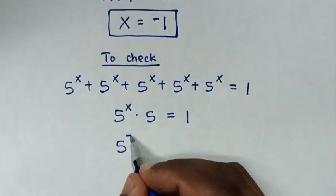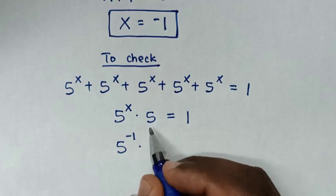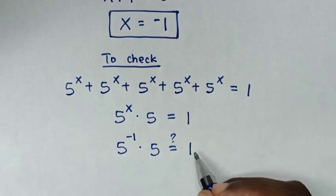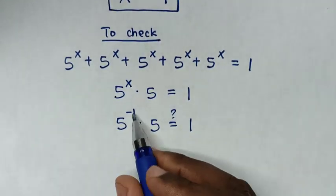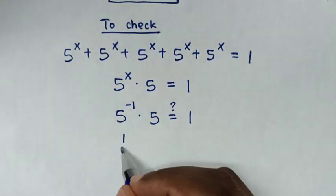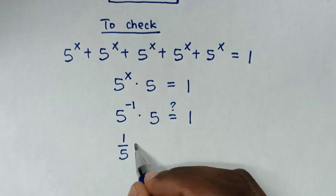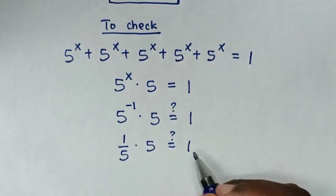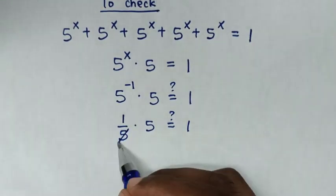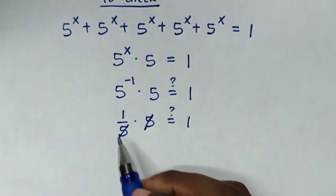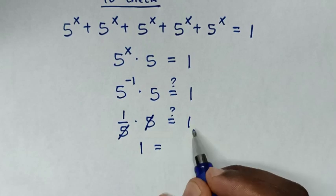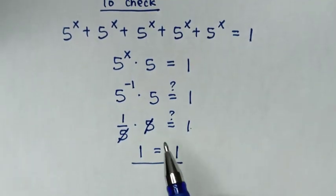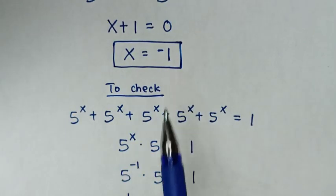So it becomes 5 power of negative 1 times 5 is equal to 1. Since 5 power of negative 1 is the same as 1 over 5, we get 1 over 5 times 5, which simplifies to 1 is equal to 1. The left side and right side are equal, so it is confirmed true that x is equal to negative 1.